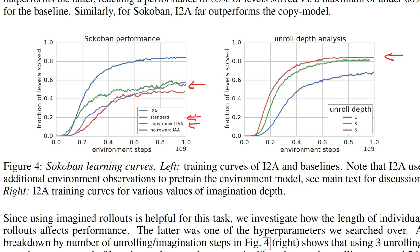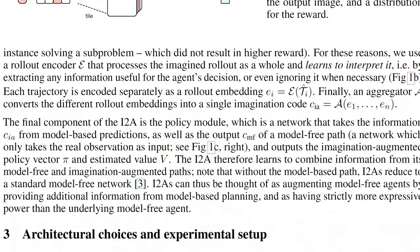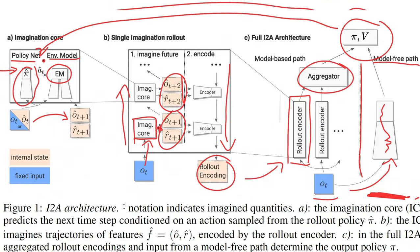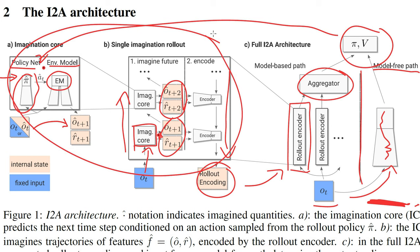What I don't like is their comparison baseline. They compare to a standard model-free agent, which performs worse because it has no imagination — but it also has fewer parameters. So they try to compare to something with the same number of parameters using a 'copy model' agent. What the copy model does is use the same architecture, but for the environment model it simply predicts the output as identical to the input — it says the environment will be exactly the same after any action. I don't like this because the entire imagination branch becomes rather useless, so calling it a fair parameter-matched comparison is technically true but misleading.